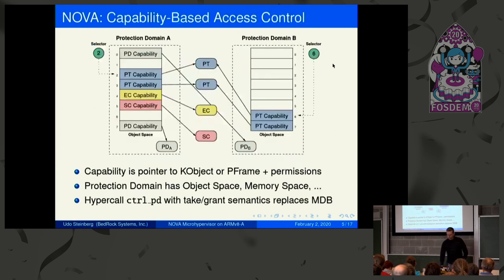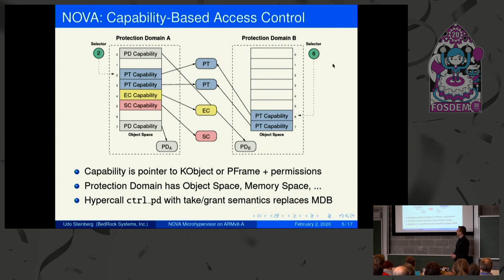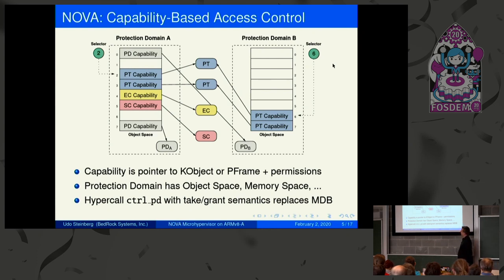Nova is a microhypervisor that takes the best ideas from microkernels, capability-based systems, and high-performance virtualization and puts them together in a small piece of code. The x86 version is less than 10,000 lines of code, and the ARM version is currently less than 7,000 lines of code.